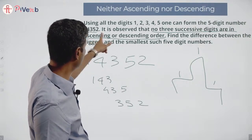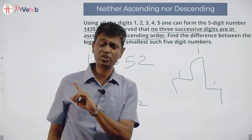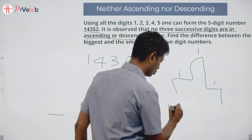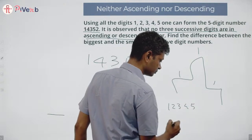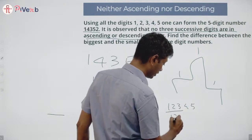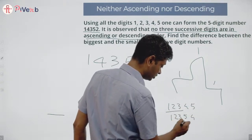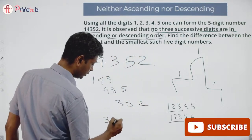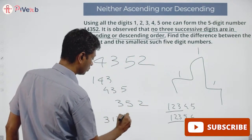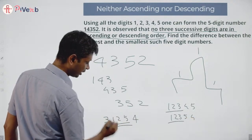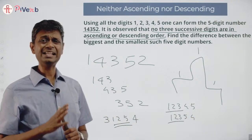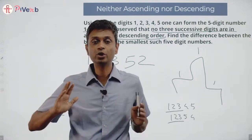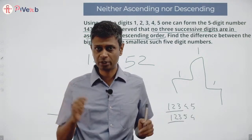We cannot have 12345 — that's ascending order. We cannot even have 12354, because those first three are in ascending order. We cannot have 31254 either, because 1-2-5 are in ascending order. For any three successive digits — first three, middle three, or last three — they must not be in order.